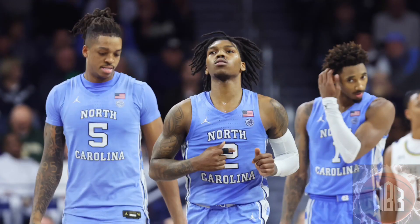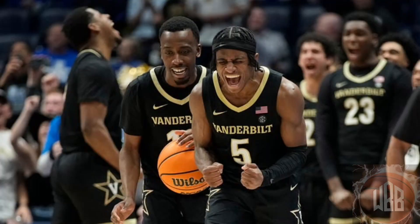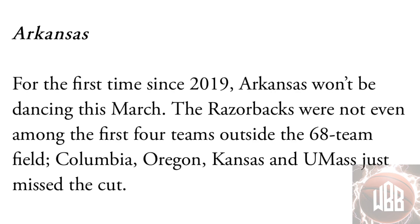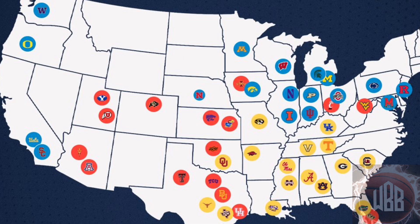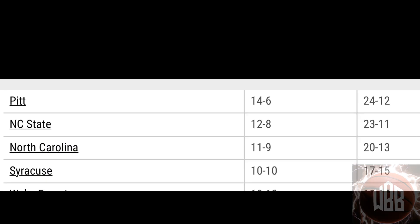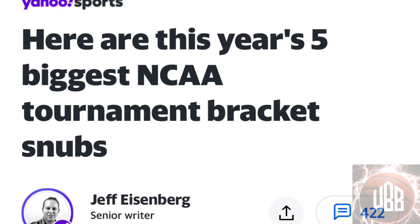Furthermore, at-large bids are going to be a serious problem. There was already a huge controversy with Rutgers, Vanderbilt, and North Carolina not getting at-large bids in the men's tournament, and the women's bracket had no shortage of snubs either, such as Columbia and Oregon. This problem is about to get ten times worse for the 2024 tournament. When you have conferences with 16 to 18 teams, you're going to have teams that are easily tournament-worthy but don't seem impressive because of their record.